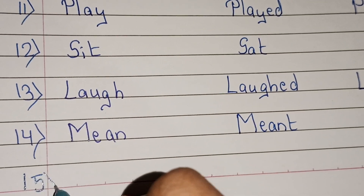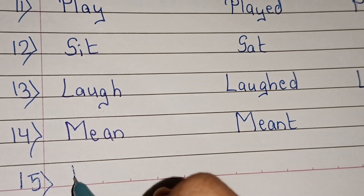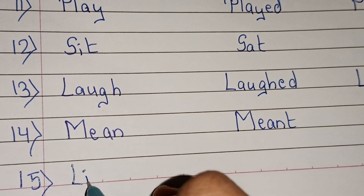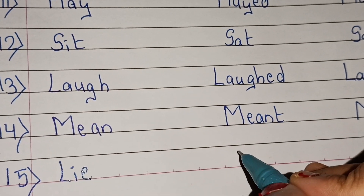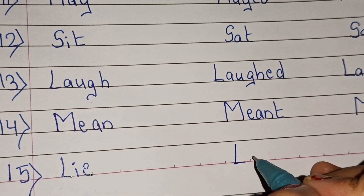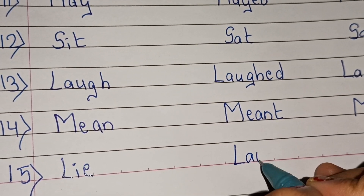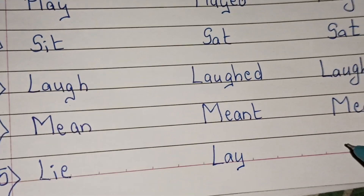Fifteenth: lie — verb 1; lay — verb 2; lain — verb 3.